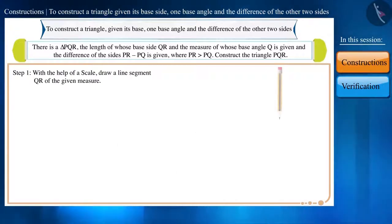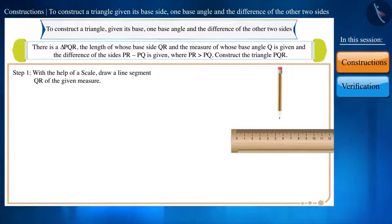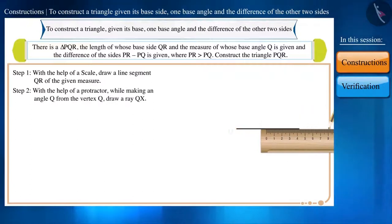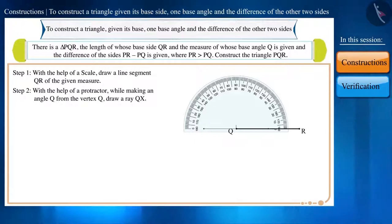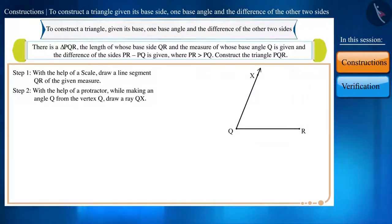Step 1: First of all, with the help of a scale, draw a line segment QR of the given measure. Step 2: With the help of a protractor, by making an angle Q from the vertex Q, draw a ray QX. Step 3: